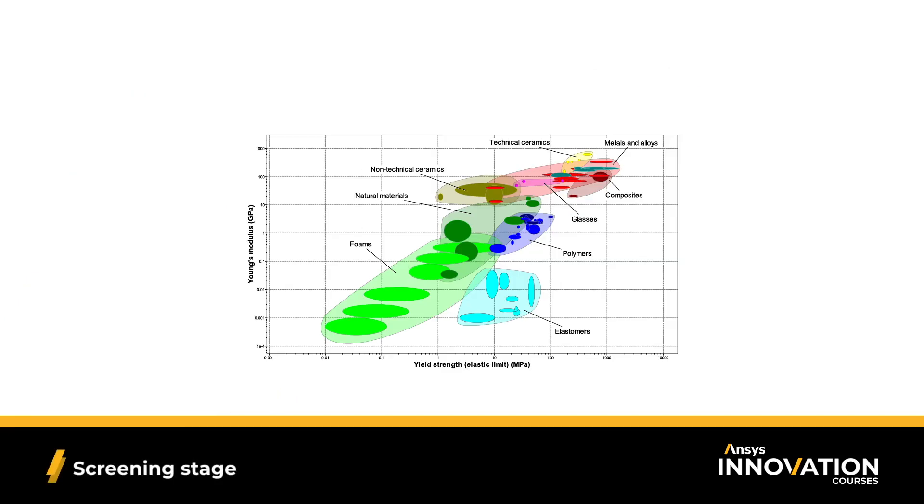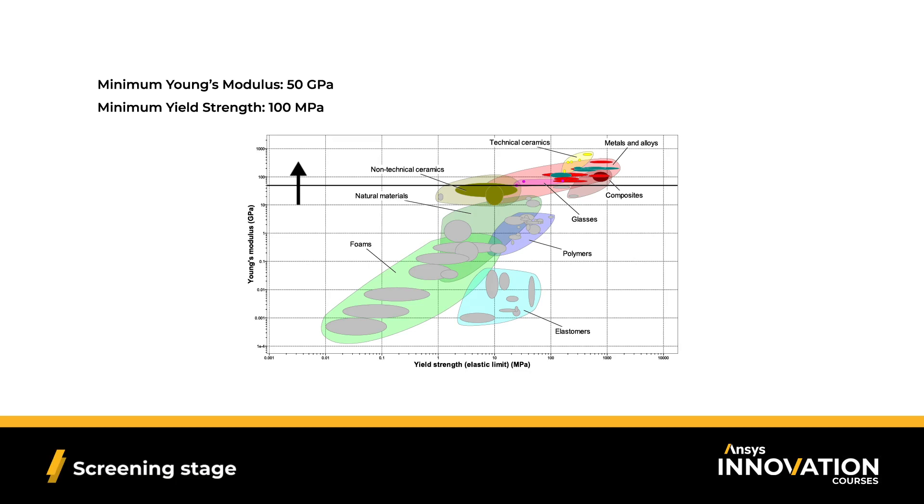Based on some background research, we know we need a minimum Young's modulus of 50 gigapascals and a minimum yield strength of 100 megapascals. On our chart, we want to only consider materials whose values are above both of our minimum. We can do this by drawing a few lines. I'll start with Young's modulus. If I place a line at 50 gigapascals, I want to consider materials that are only above this line. Now I place my line for yield strength at 100 megapascals. For values greater, I'm considering every material to the right of this line.